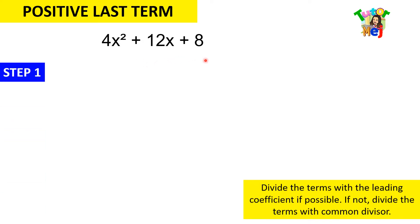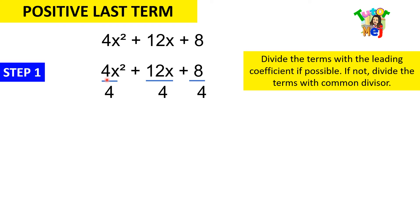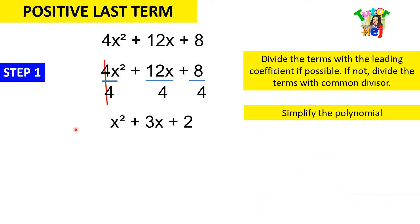Step 1: we are going to divide the terms with the leading coefficient if possible. If not, divide the terms with the common divisor. So let us try 4 and divide everything by 4. Dividing 4x squared by 4, we get the simplified form x squared plus 3x plus 2.